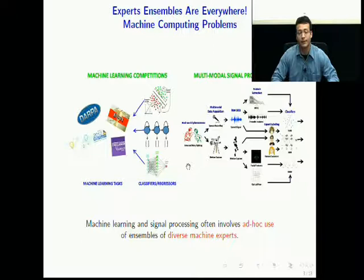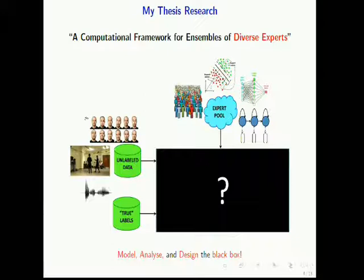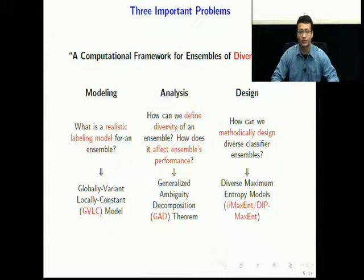My thesis focuses on a computational framework for ensembles of diverse experts, where I have a ton of unlabeled data on the left, which may also have some true labels. This data is generated by humans, and on the top I have a big pool of experts, which could be human or machine experts, and the task is to design this black box. I divide the problem into three sub-problems, which involve modeling, analysis, and design.